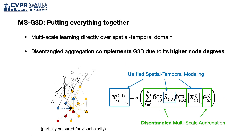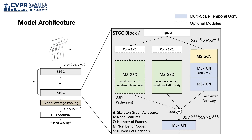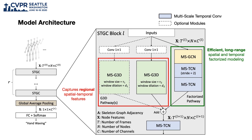Finally, we can couple our proposals into a powerful feature extractor that learns multi-scale features directly in the spatial-temporal domain. Our final architecture consists of stacks of convolutional blocks, where each block deploys a multi-pathway design. The G3D pathway on the left captures regional spatial-temporal features, and the factorized pathway on the right complements it by providing a more economical way to model long-range dependencies.